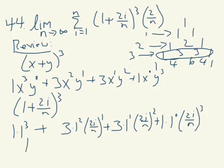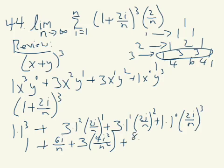So let's see what that is and then we'll throw it back in the limit equation. This is going to be 1 plus 6i over n. This one will be a little bit tougher to do. This will be 3 times that square which is 4i squared over n squared, and the last one will be 8i cubed over n cubed.